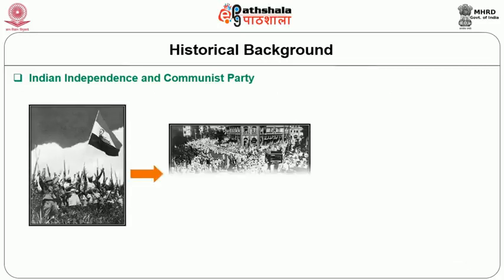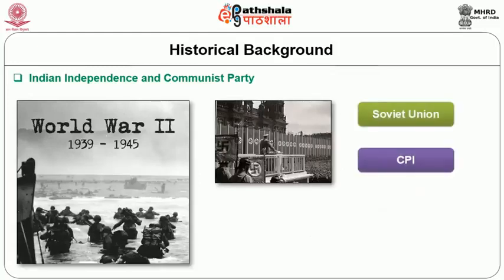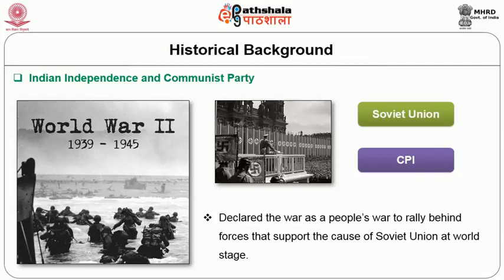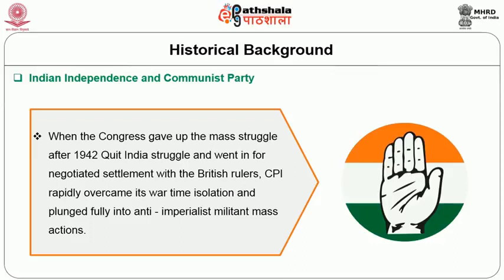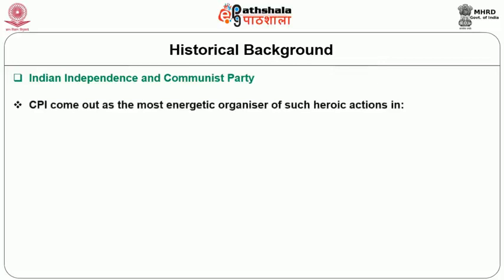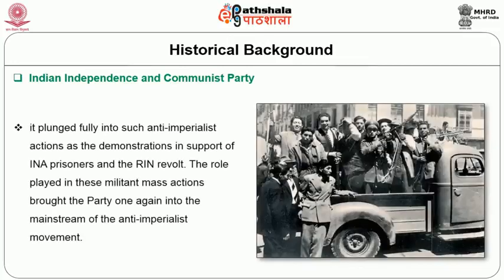In the period of the final struggle of Indian independence through the Quit India Movement, CPI got isolated from the mainstream freedom struggle when, in the later phase of the Second World War after Nazi Germany attacked Soviet Union, CPI declared the war as a people's war to rally behind forces that support the cause of Soviet Union at the world stage. Later on, when the Congress gave up the mass struggle after the 1942 Quit India Movement and went in for a negotiated settlement with the British rulers, CPI rapidly overcame its wartime isolation and plunged fully into anti-imperialist militant mass actions. CPI came out as the most energetic organizer of such heroic actions in Telangana, Punnapra, Vayalar, Tebhaga, etc. It also plunged into such anti-imperialist actions as demonstrations in support of INA and INA prisoners, and the Royal Indian Navy revolt. The role played in these militant mass actions brought the party once again into the mainstream of the anti-imperialist movement.